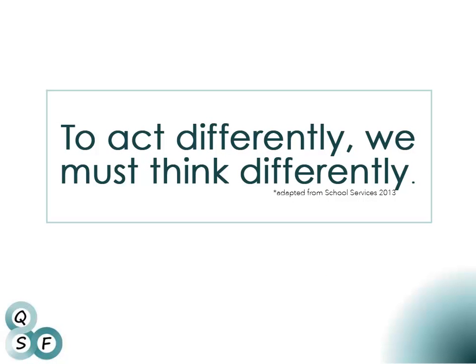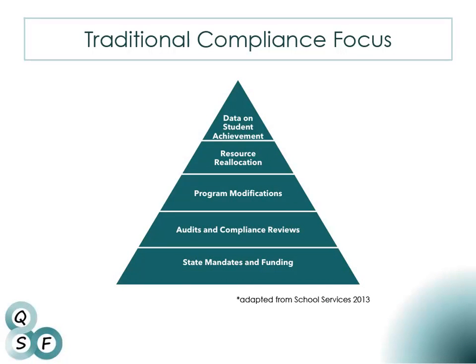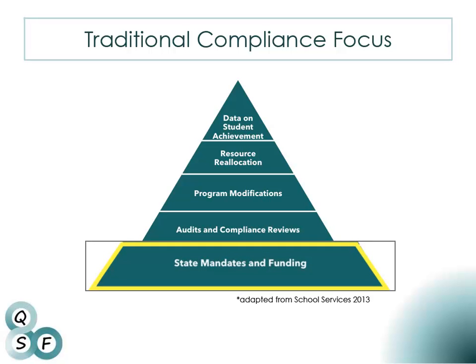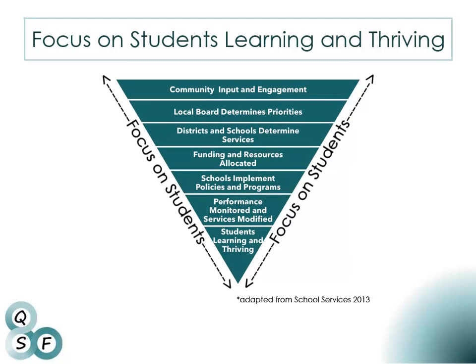The Quality Schooling Framework reflects a change in the way we look at schooling in California. In the past, schooling was based on a compliance model. As you can see in this diagram, schools and districts were required to respond to a set of performance requirements for funding. Today, the California Department of Education is committed to a model in which schools and districts are empowered to adopt and enact policies and programs that best suit their local needs to support students' success in their local communities.